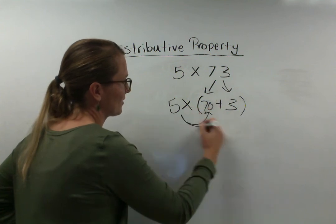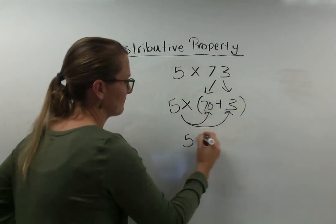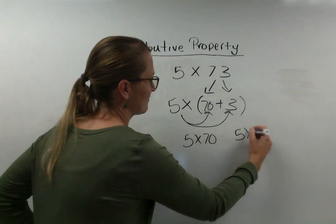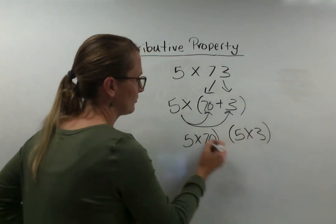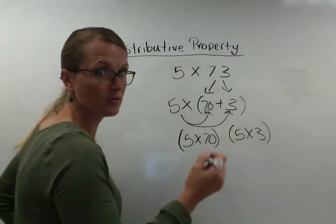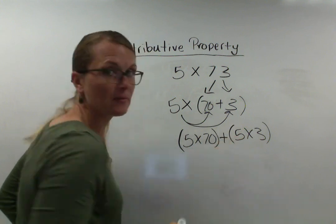We're going to multiply the 5 by each of those numbers. We're going to multiply the 5 times the 70. Then we're going to multiply the 5 times the 3. And I'm going to put parentheses around them because we have to do those separately. And when we're done, we're going to add them back together.